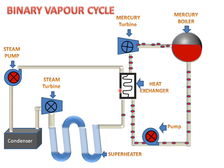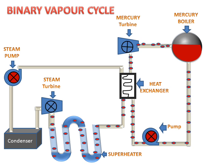The water will convert into steam through contact between mercury vapor and water. This will be converted into dry steam because mercury vapors are at very high temperature. When they contact the water, they convert this water into vapors or dry steam. This dry steam will then go to the super heater for super heating.